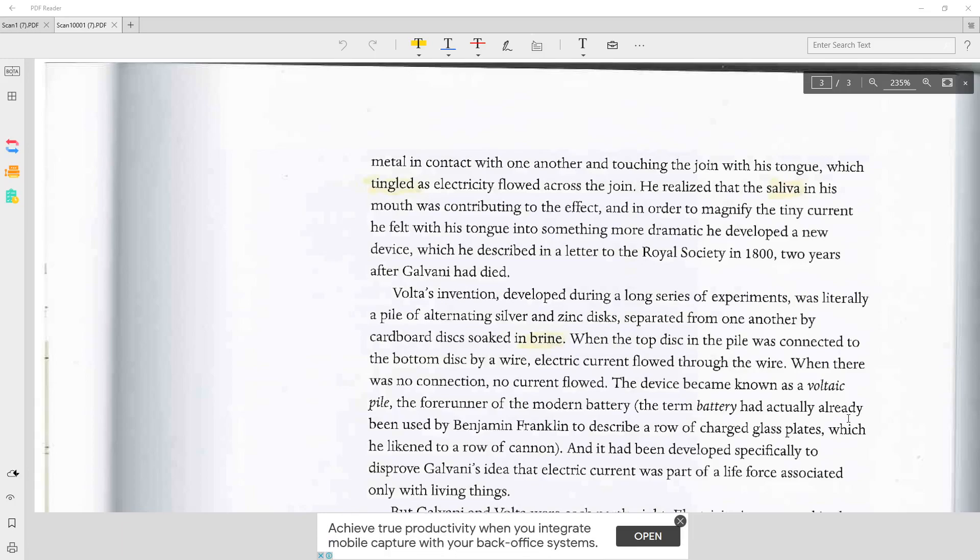Volta's invention, developed during a long series of experiments, was literally a pile of alternating silver and zinc discs separated from one another by cardboard discs soaked in brine. When the top disc in the pile was connected to the bottom disc by a wire, electric current flowed through the wire. When there was no connection, no current flowed. The device became known as Voltaic Pile.